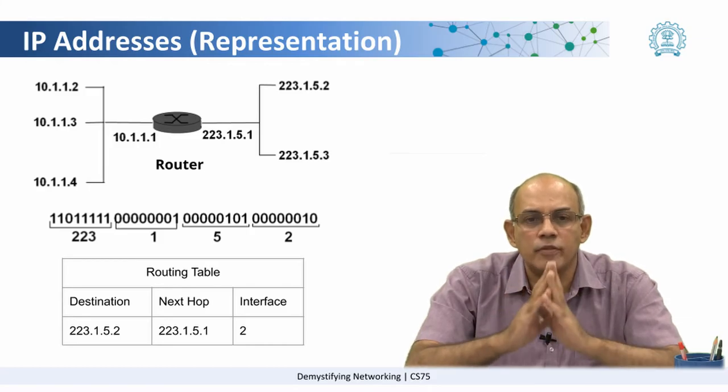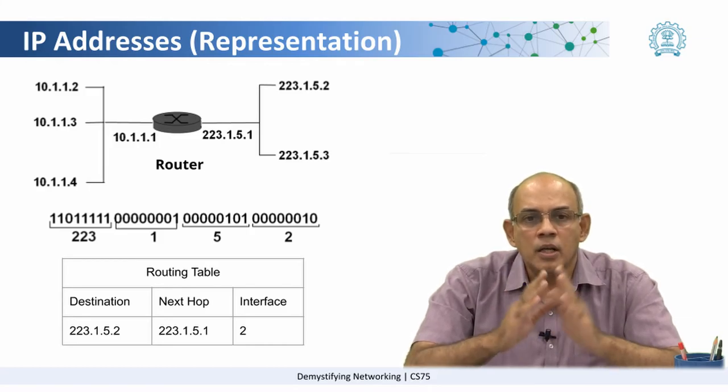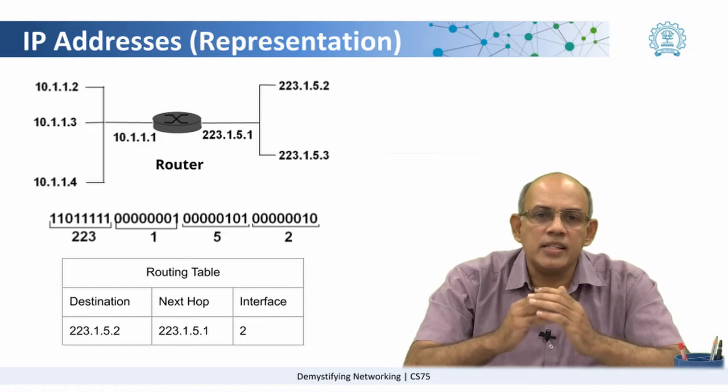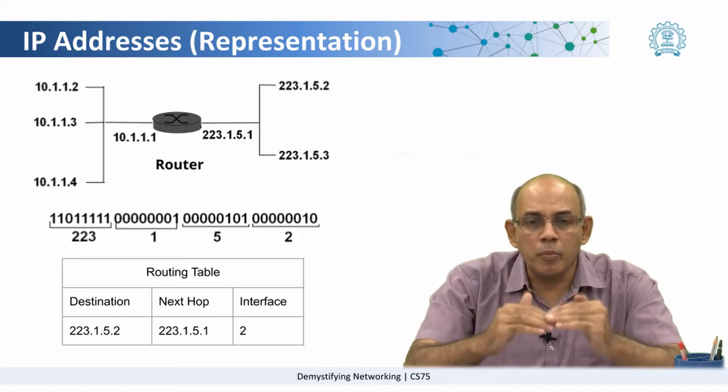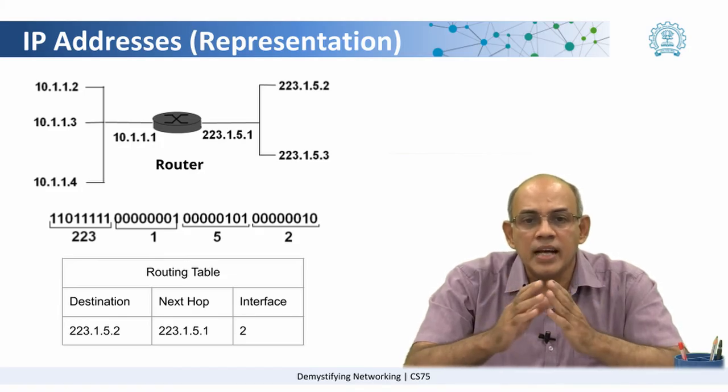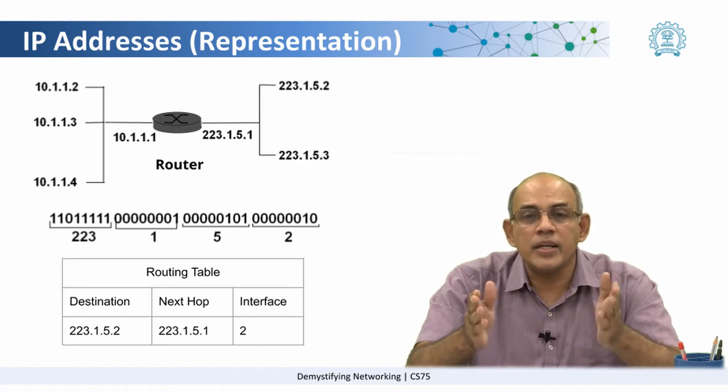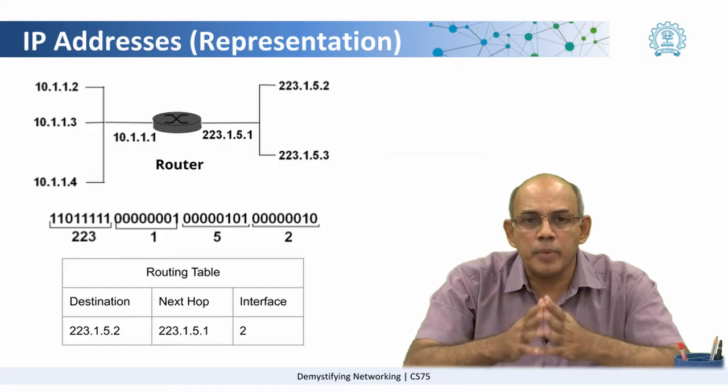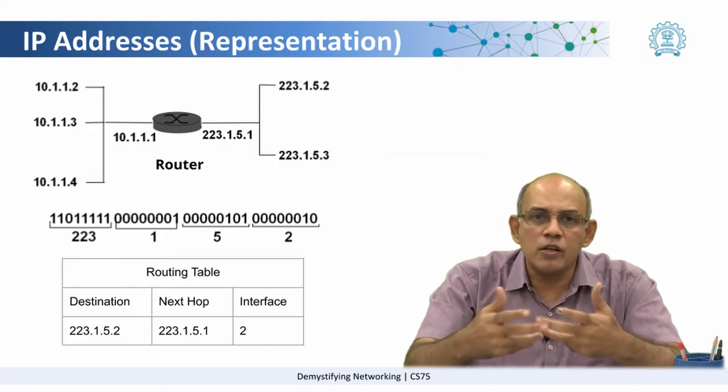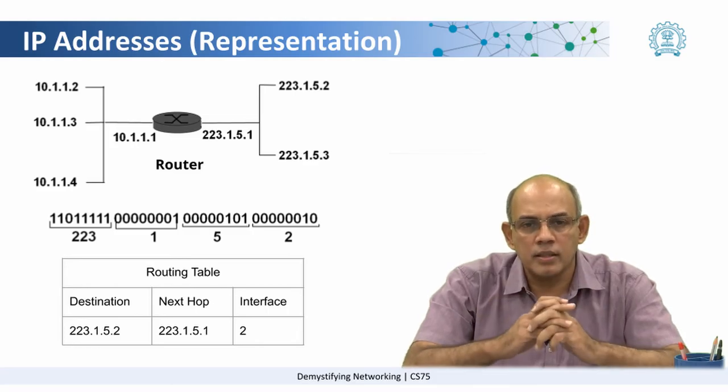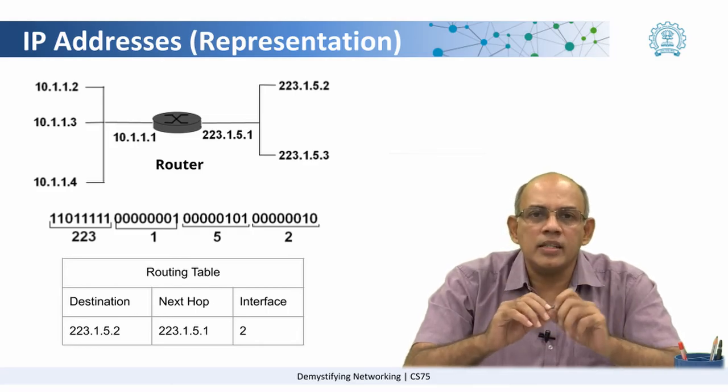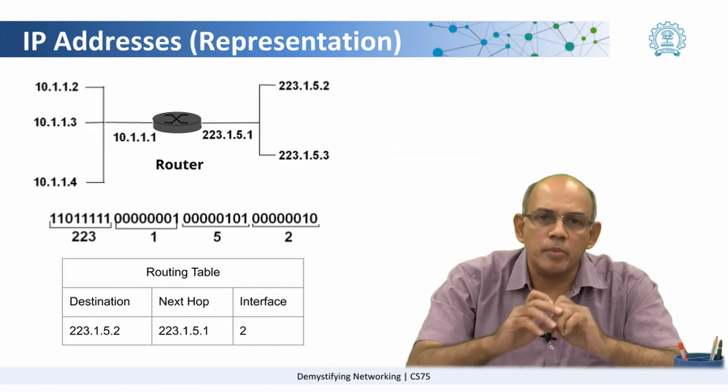Let us look at one side of this network. On one side you see addresses of the form 10.1.1.2 and so on. At the bottom, we see that an IP address is nothing but a 32-bit number. It is a 32-bit binary number which for ease of human comprehension is split into four octets, and each octet is read in the corresponding decimal form.